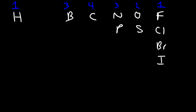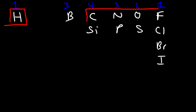Phosphorus, like nitrogen, likes to form three bonds. Silicon, like carbon, likes to form four bonds. But these are the most common elements that you're going to be dealing with in organic chemistry.